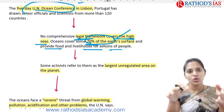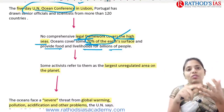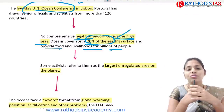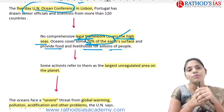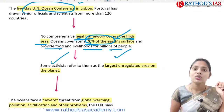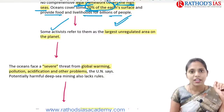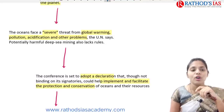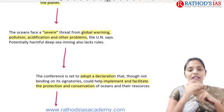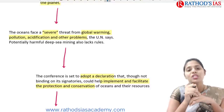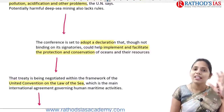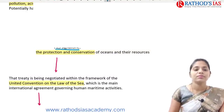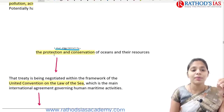Oceans cover 70% of Earth's surface and provide food and livelihood for billions of people through fishing, transportation, and trade. Activists say these are the largest unregulated areas on our planet. Oceans now face severe threats from global warming, pollution, acidification, and other problems. This conference is mainly said to adopt a declaration, though not binding on its signatories.